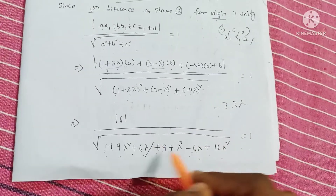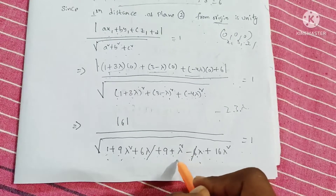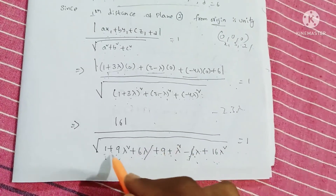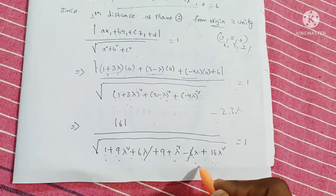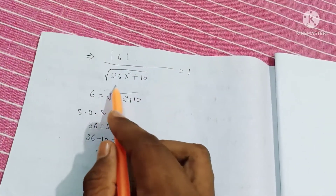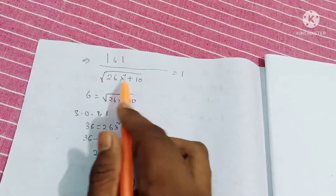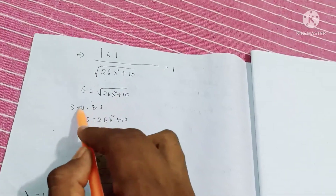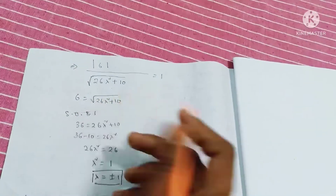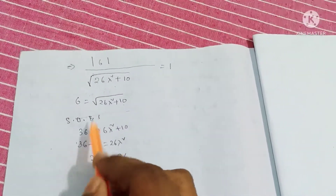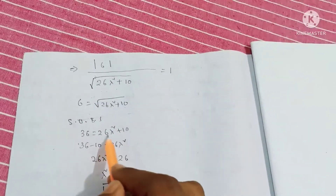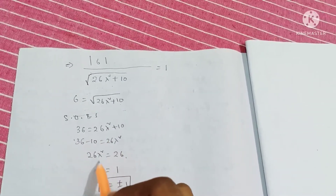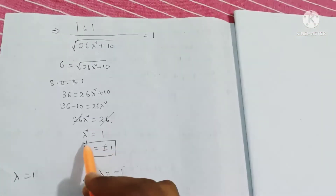So 6 equals root over (26 lambda square plus 10). Squaring both sides: 36 equals 26 lambda square plus 10. Therefore 26 lambda square equals 36 minus 10 equals 26. The 26 cancels, giving lambda square equals 1, so lambda equals plus or minus 1.